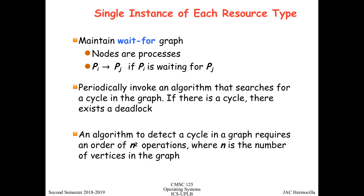The algorithm is periodically invoked — the same approach as avoidance — using cycle detection. If there is a cycle, then a deadlock exists in the system. This cycle detection algorithm requires O(n²) operations, where n is the number of vertices in the graph. In the wait-for graph, nodes are purely processes; there are no resource nodes.